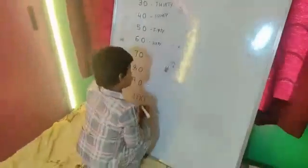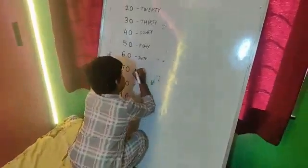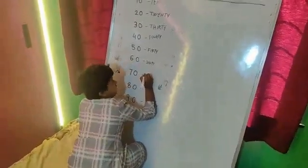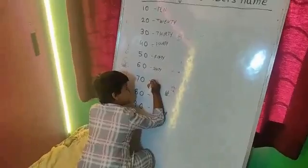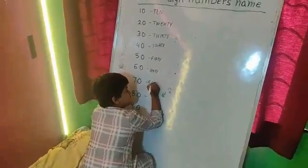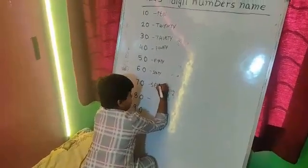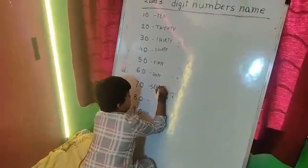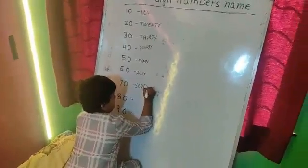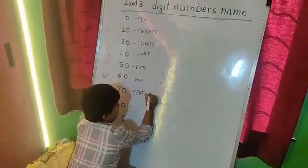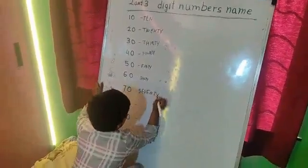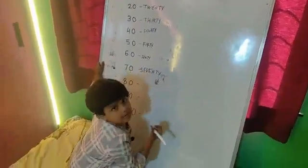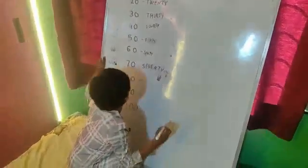I will add the 70. This is S, E, V, E, N, T, Y. 70.